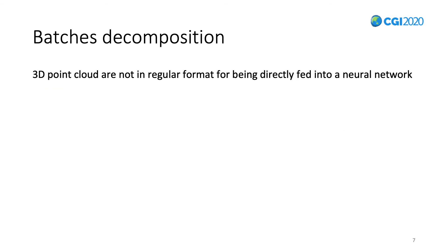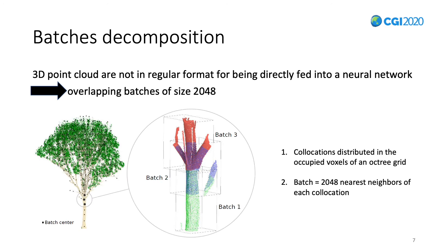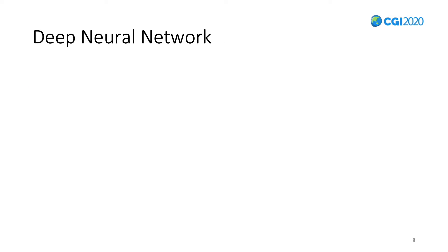The second step of our method is the transformation of the data so they can be used as input to our neural network. We divide the input point cloud into several batches, and form each batch of fixed size 2048. Those batches overlap each other, and their union completely covers the input point cloud. As illustrated in the figure, we embed the point cloud into an octa-grid, then distribute collocation points at the centroid of every occupied voxel. We then form each batch by considering the 2048 nearest neighbors of each collocation point.